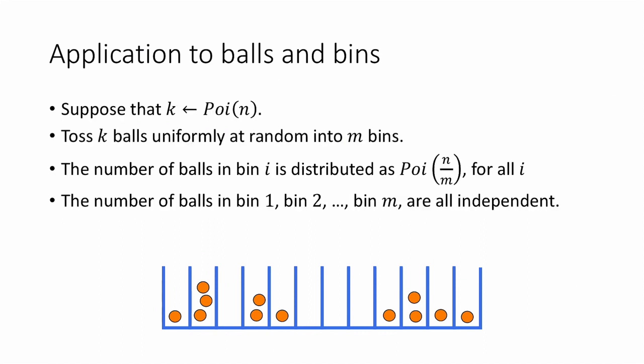Instead of studying that problem, let's study a different problem. I'm still going to consider dropping balls into bins, but now the number of balls is going to be random. More precisely, let's drop k balls into m bins, where k is a Poisson random variable with parameter n. By the concentration results we saw before, we're probably going to be dropping close to n balls. The reason to do this is that a few nice things happen. First, the number of balls in any given bin is also a Poisson random variable with parameter n divided by m. Moreover, the occupancies of all the bins are now independent random variables — this makes them much easier to analyze.